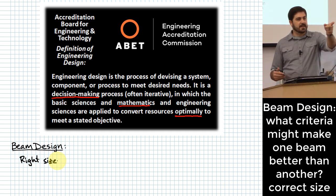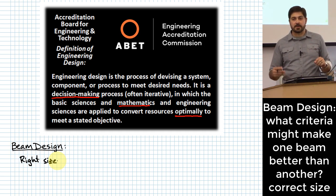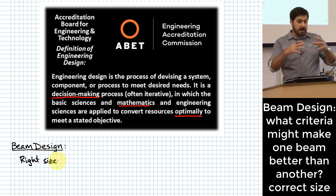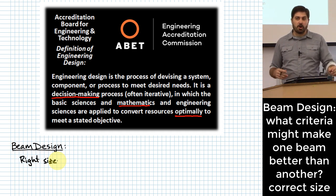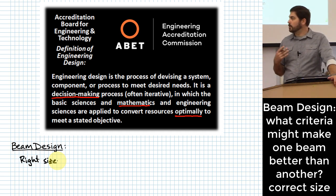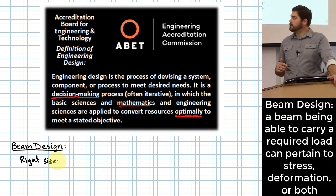Reasons you don't want a beam to be too big include cost, weight, and the space it might take up. These are all things that would matter with respect to whether or not we chose a good beam.